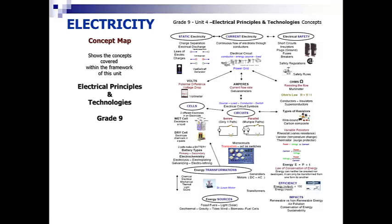Here's a concept map of what we will be covering in Science 9 Electricity Unit. Things like static electricity and current electricity, electrical safety, what makes up an electrical circuit, the units, volts, amperes, and ohms, the difference between cells and circuits, what are resistors, how energy is transformed, and some energy sources.